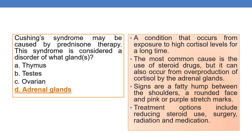Cushing syndrome may be caused by prednisolone therapy, and this syndrome is considered as a disorder of the adrenal gland. It is a condition that occurs from exposure to high cortisol levels for a long time. The most common cause is the use of steroid drugs, but it can also occur from overproduction of cortisol by the adrenal gland.